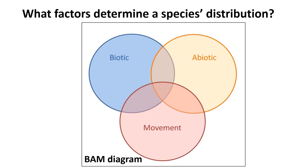Let's think about what determines a species' distribution. As you see in this figure, we have biotic, abiotic, and movement. This shape is called the BAM diagram.